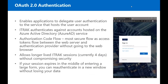OAuth 2 basically enables applications to delegate user authentication to the service that hosts the user account. iTrack authenticates against accounts hosted on Azure Active Directory. As you can see in the screenshot, rather than authenticating through the iTrack app, you're redirected directly to Microsoft where all authentication takes place. After the process is complete, you're redirected back to iTrack and automatically logged in. We've implemented the OAuth 2 authorization code flow, the most secure flow, because access tokens flow between the web server and the authentication provider.